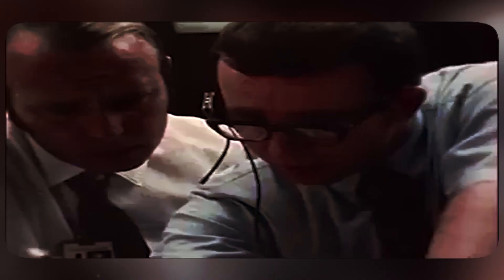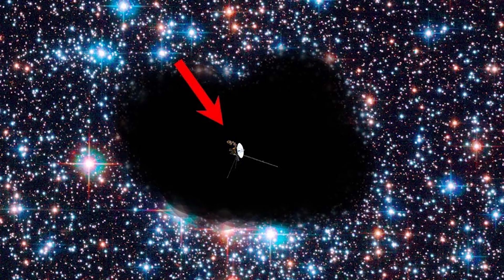As astronomers mapped the distribution of these galaxies, they noticed something weird. Voids, regions where galaxies were absent. These peculiar areas, initially considered anomalies, later gained recognition as voids.